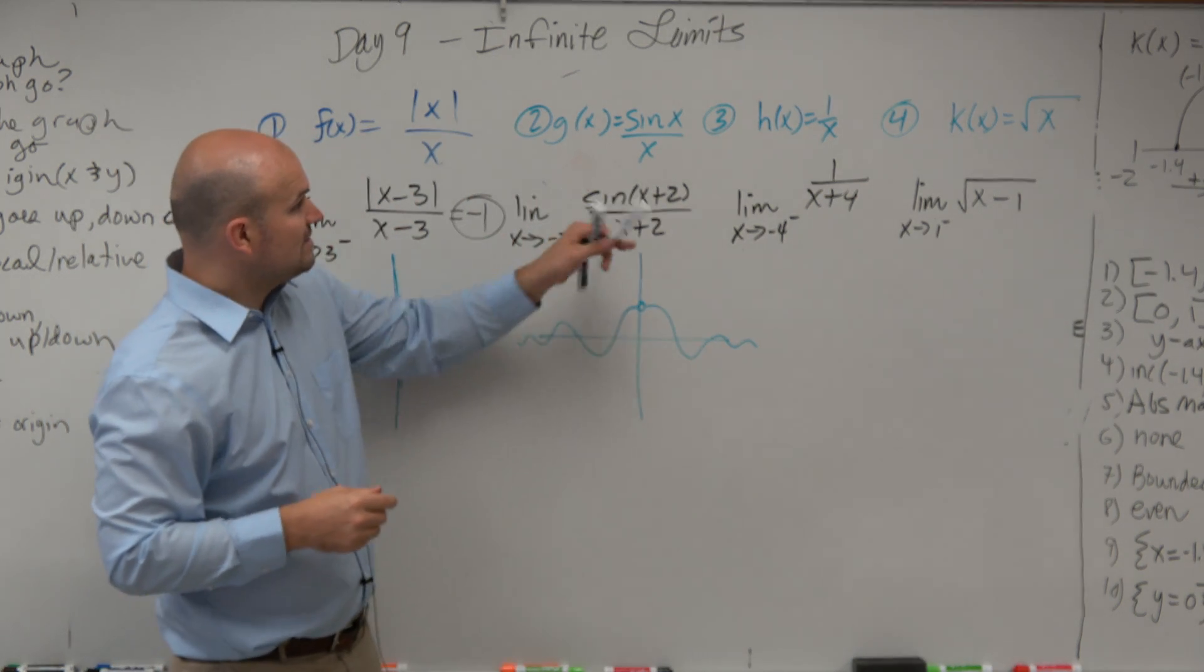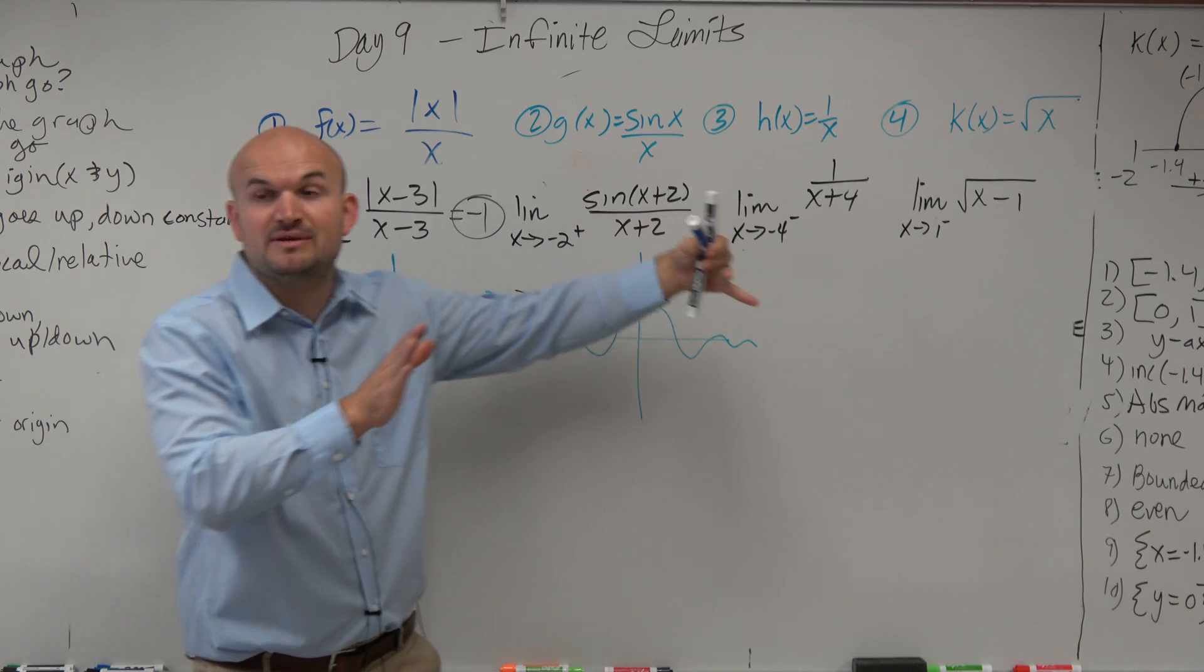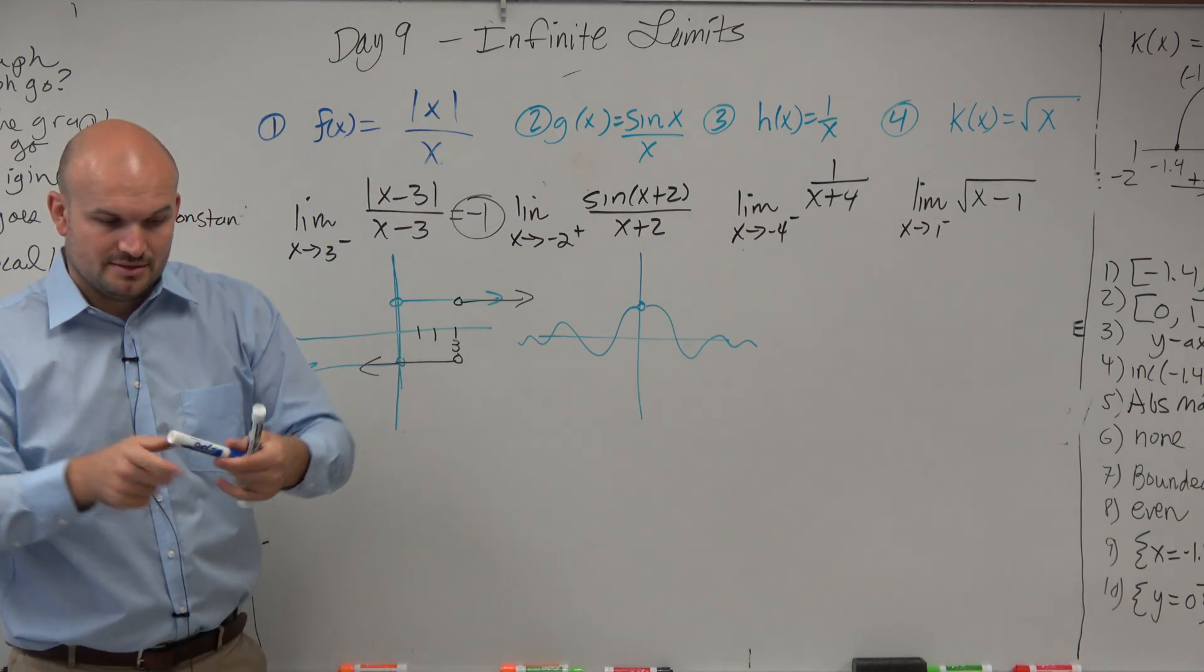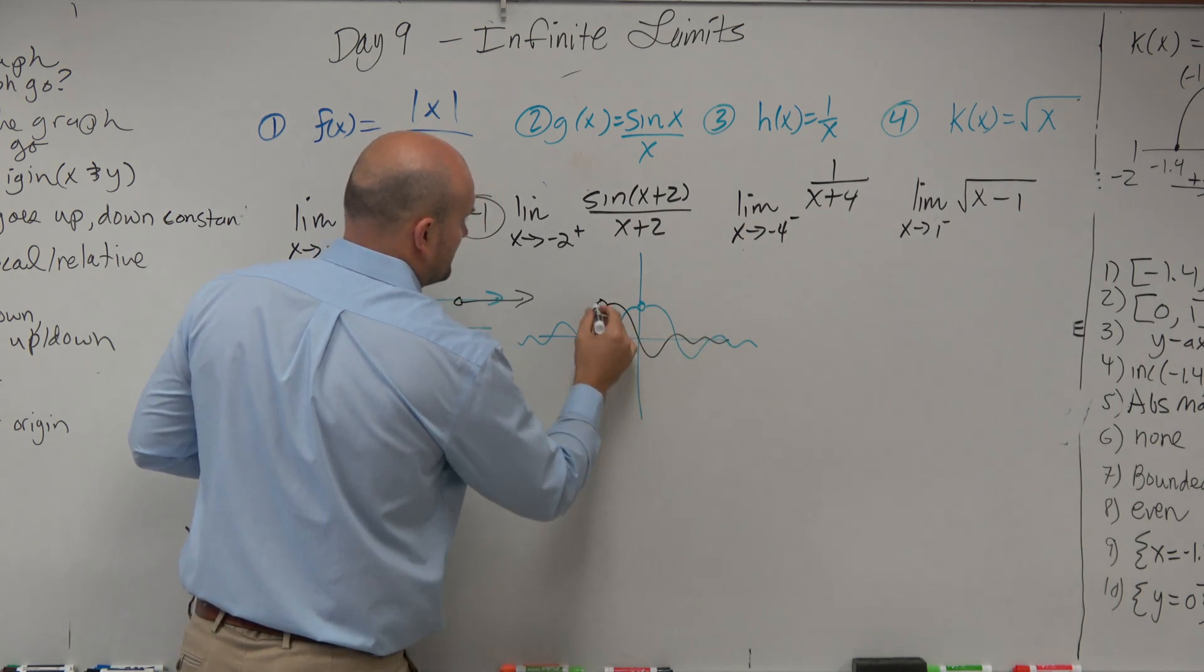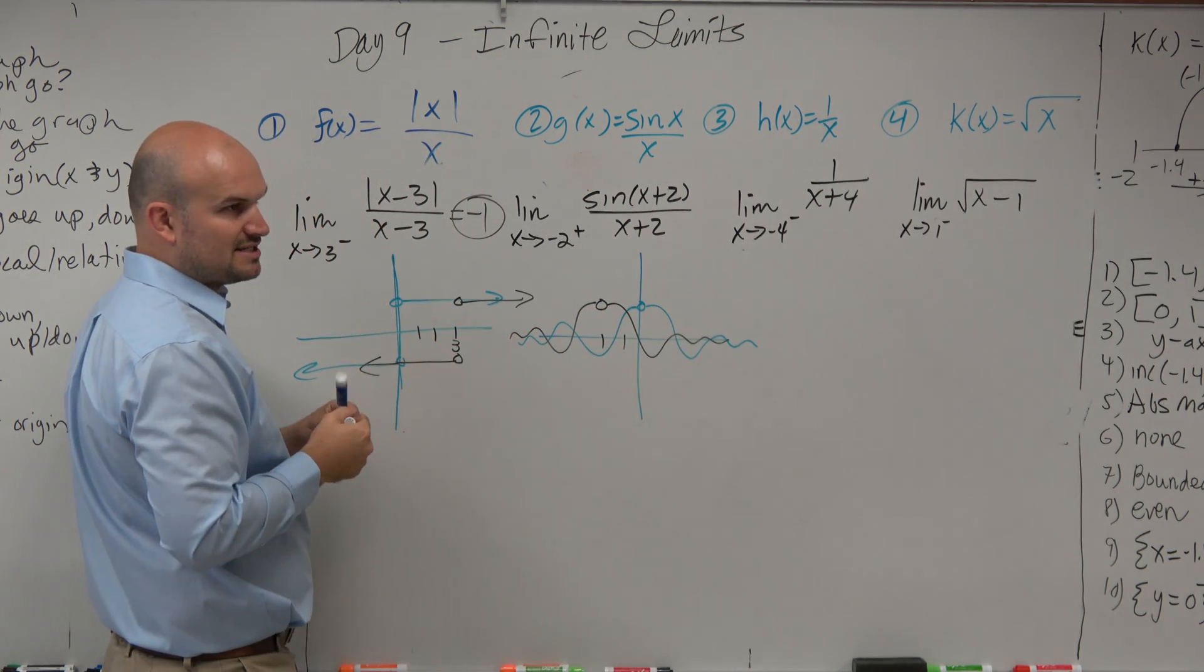So now, what's happening? It's being x plus 2. That means the graph is being shifted to the left 2. So move it to the left 2, same graph, just being oscillated a little bit.